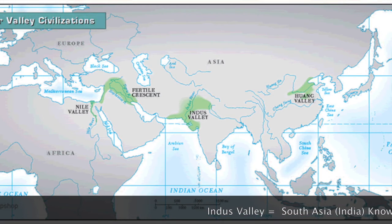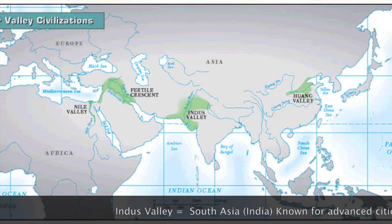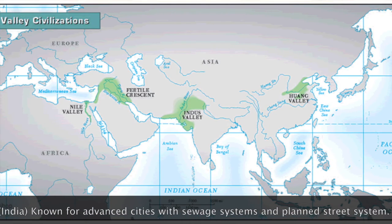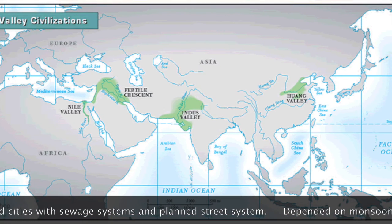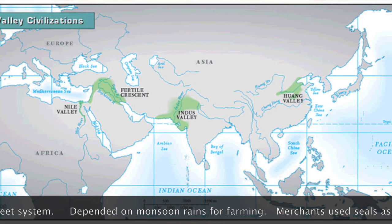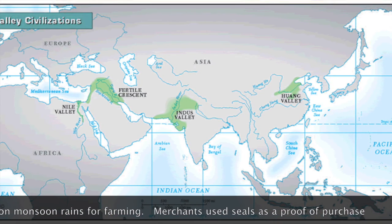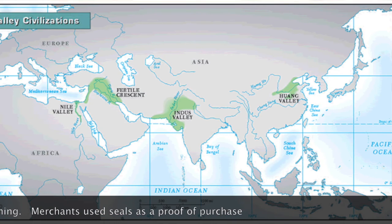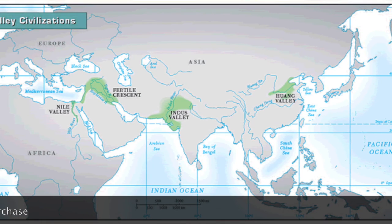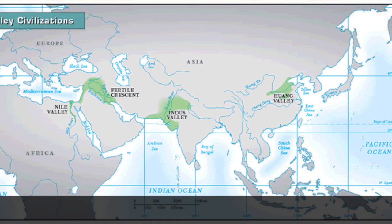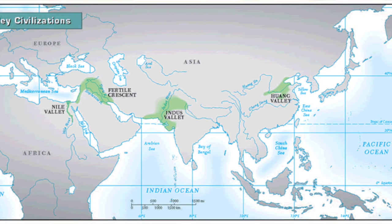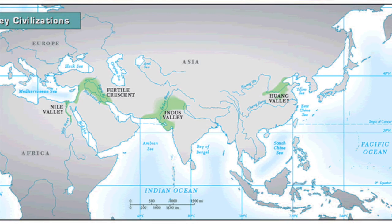Next up is the Indus Valley Civilization. They had some geographic advantages in their favor. The Himalaya Mountains protected them from invasion from the north, and they also had the Indian Ocean to the south, which somewhat isolated them but made it easy to go out on boats and trade. They also had monsoons — powerful seasonal rains that made their land very fertile. The Indus Valley merchants had special seals, kind of like an ancient version of a receipt, as proof of purchase. And of course, they also had indoor plumbing and indoor toilets.